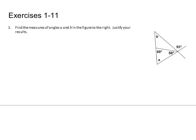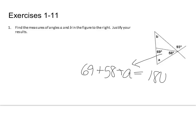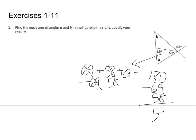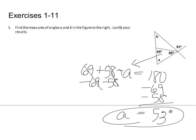First, find the measures of angles a and b in the figure to the right. I have a triangle here and I know two of the angles, so it's easy to find the third. 69 degrees plus 58 degrees plus a equals 180. So 180 minus 127 gives us a equals 53 degrees.